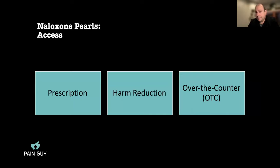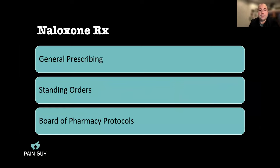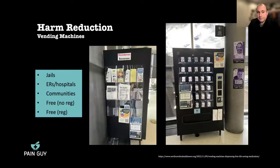Mark addresses pediatric considerations, noting that both cases today touched on who else is in the household. The second case in particular, where Norco and Percocet were present in the home, raises the question of who else may be in the environment — reinforcing the importance of naloxone education for the whole household.